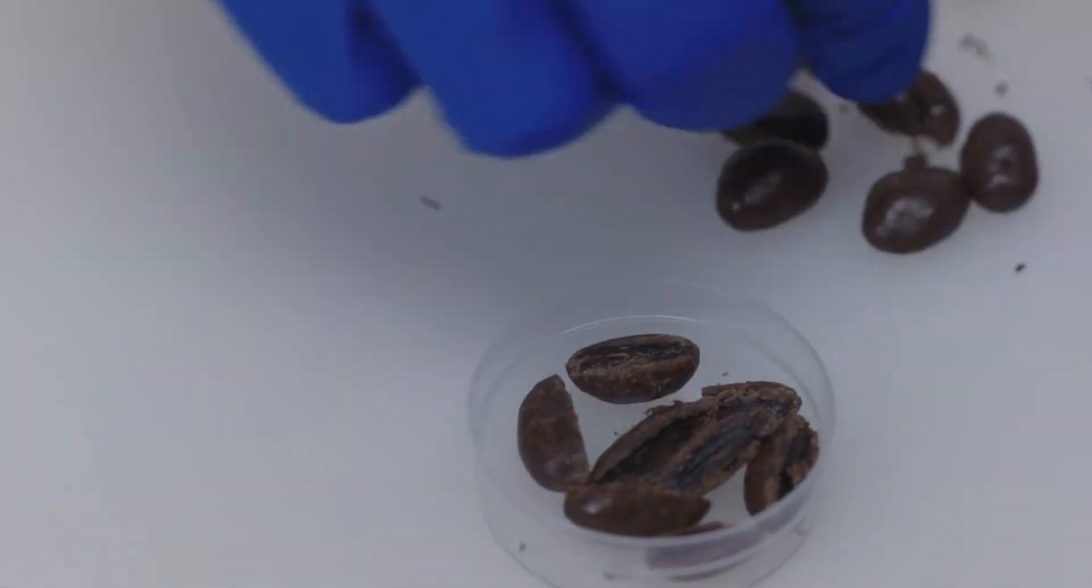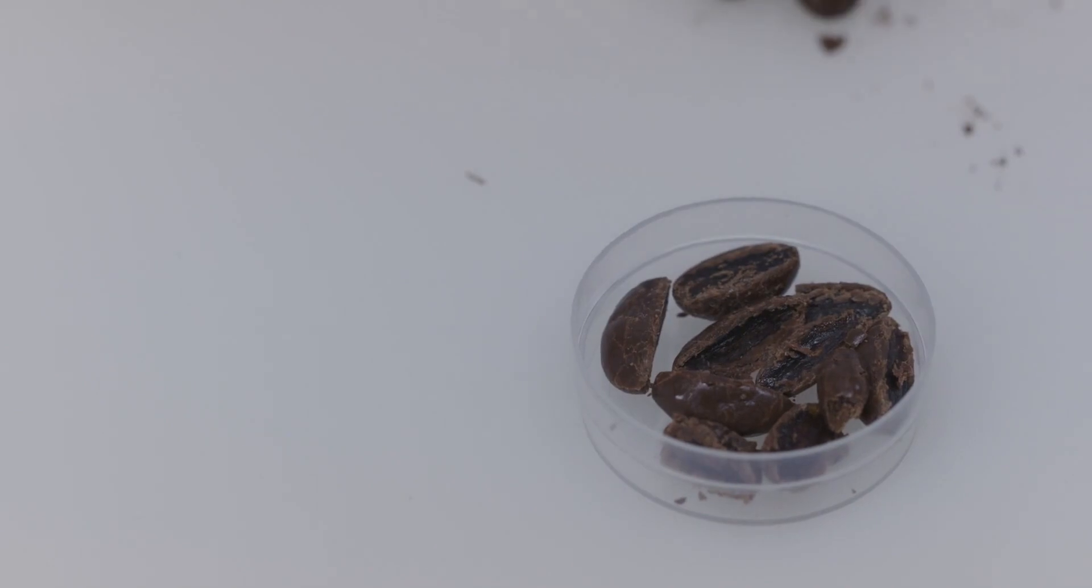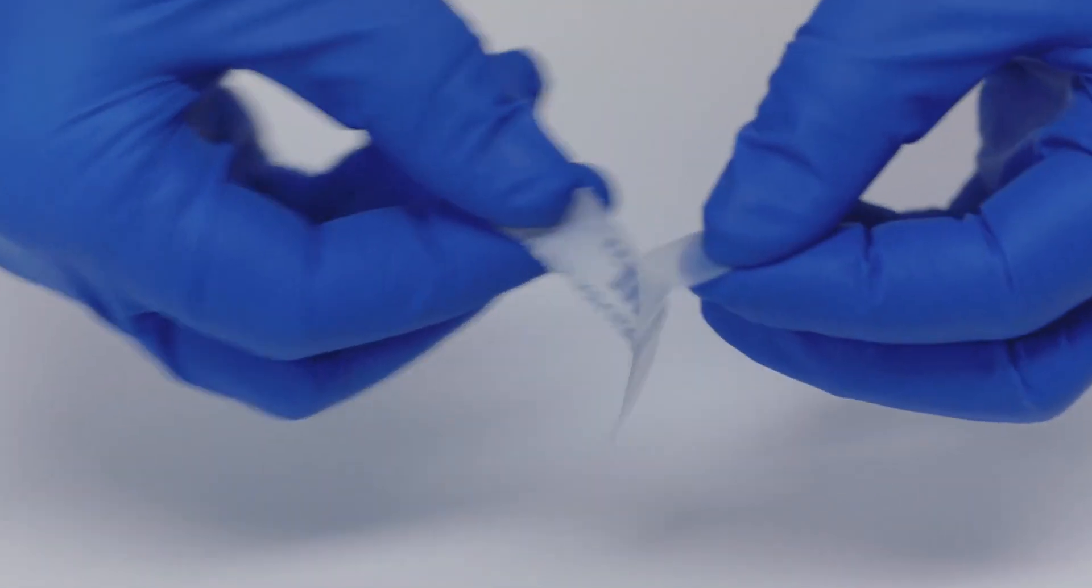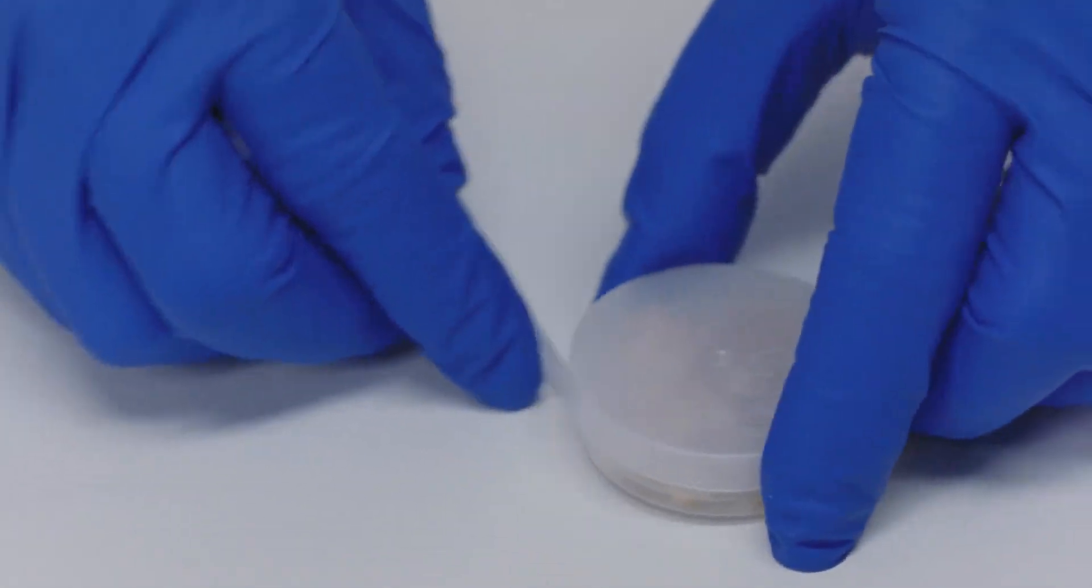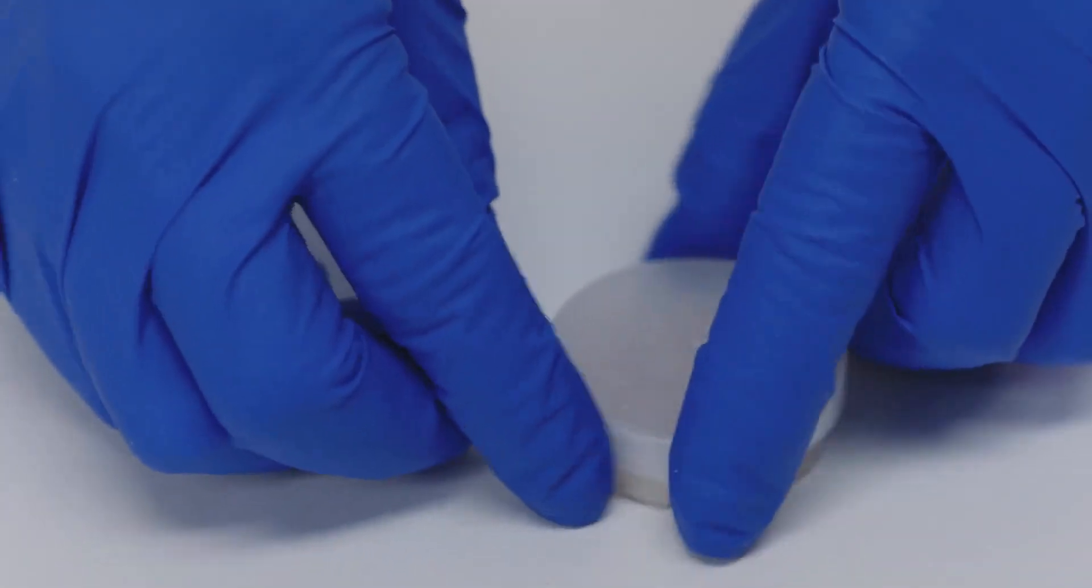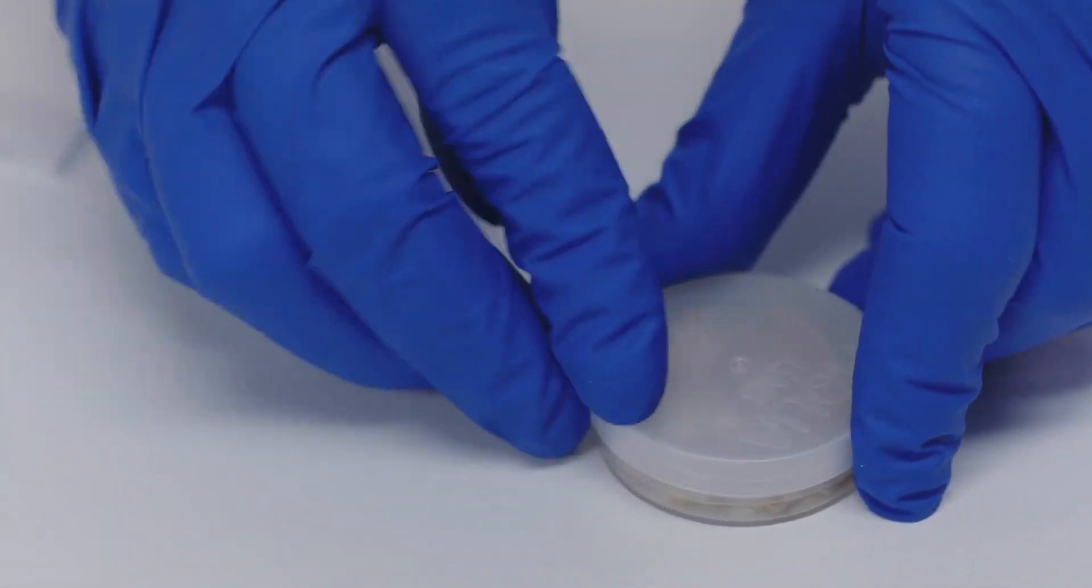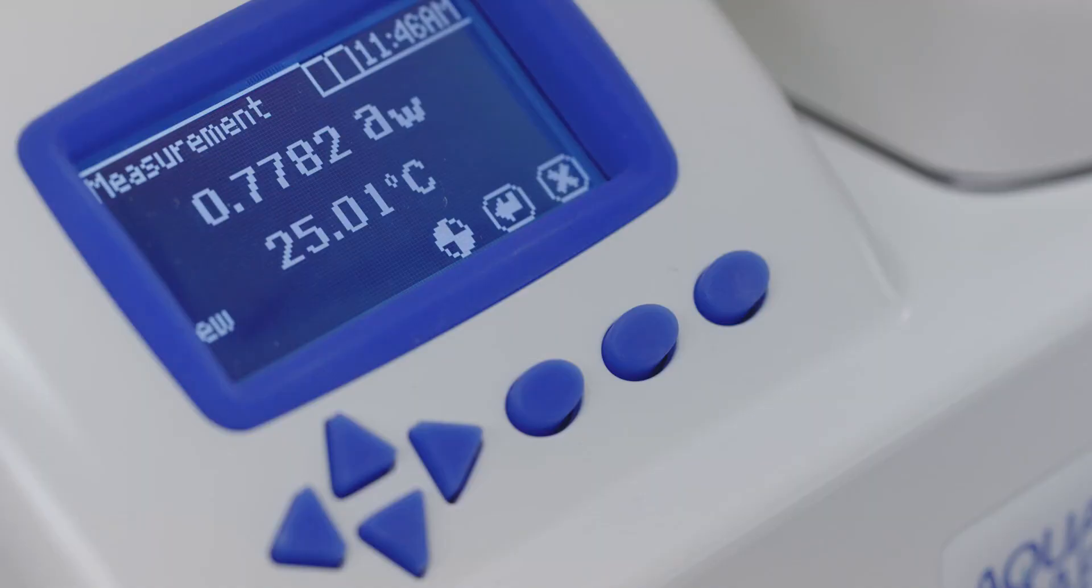Establish a standard operating procedure to specify how samples are prepared and be consistent. Your procedure should include how the sample is handled while waiting to be read and the temperature the sample and instrument should be at during the reading. When you set up this protocol, consider running your own tests to find which preparation method produces the most stable result.